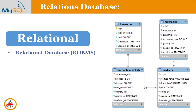The main topic is that when you use a relational database, you use tables — such as a transaction table, a purchasing table, transaction details, and a product table.